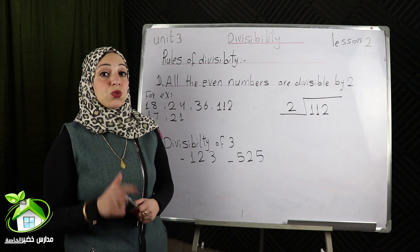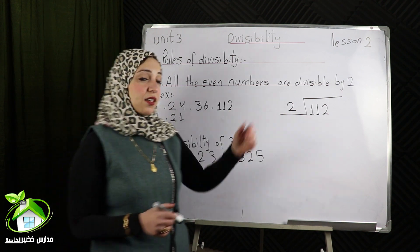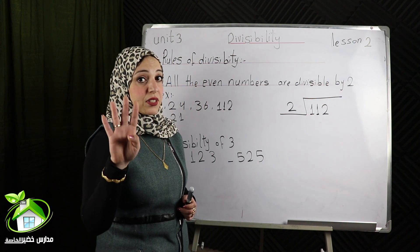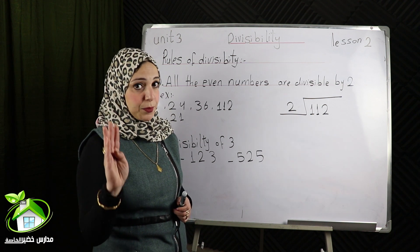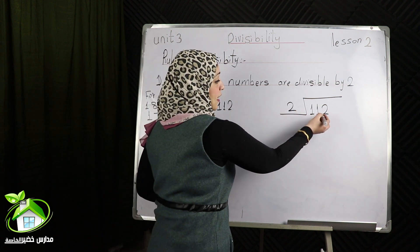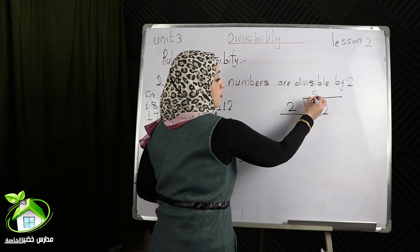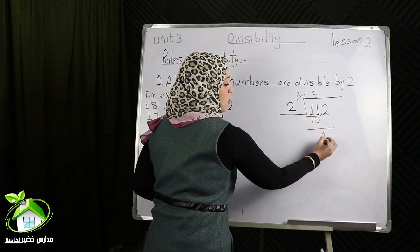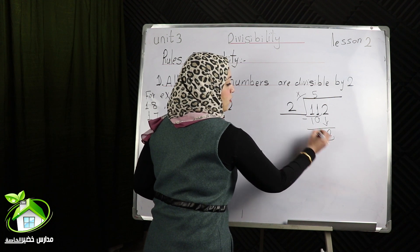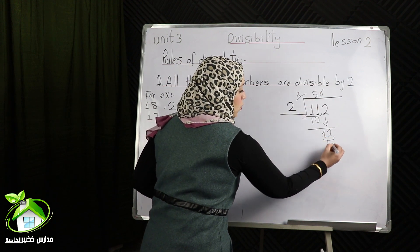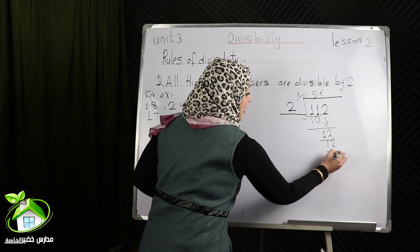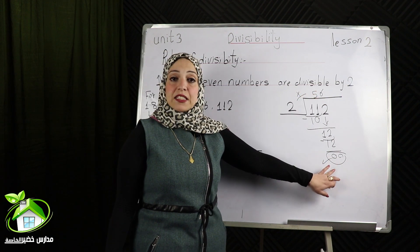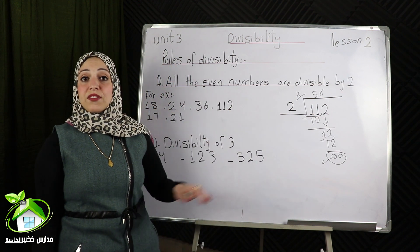If you want to check your answer, we can do the division. Like 112 divided by 2. I know that there are 4 steps for doing the division: division, multiplication, subtraction, and bring down. 1 divided by 2 can't — 11 divided by 2 equals 5. 5 times 2 equals 10. Subtraction: 11 minus 10 equals 1, and bring down to get 12. 12 divided by 2 equals 6. 6 times 2 equals 12. 12 minus 12 equals 0, and the remainder equals 0. So 112 divided by 2 equals 56 and the remainder equals 0. So 112 is divisible by 2.